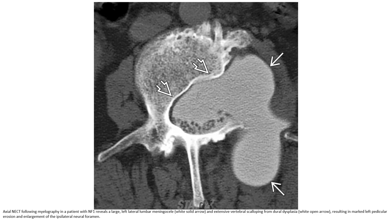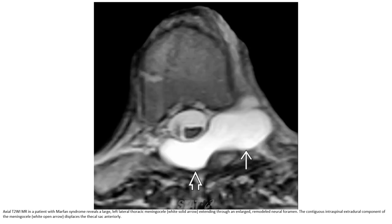Non-contrasted CT with myelography in a patient with S1 reveals a large left lateral lumbar meningocele, with associated vertebral scalloping from dural dysplasia, resulting in pedicolar erosion and enlargement of the ipsilateral neural foramen, with the contiguous intraspinal extradural component of the meningocele displacing the thecal sac anteriorly.